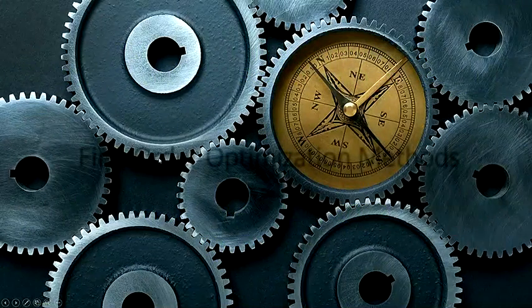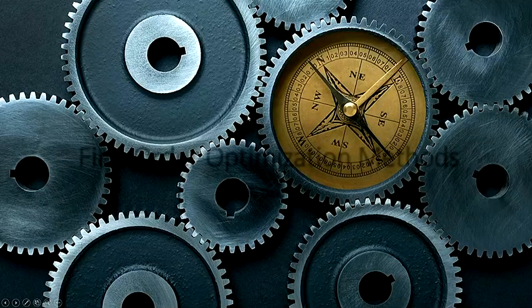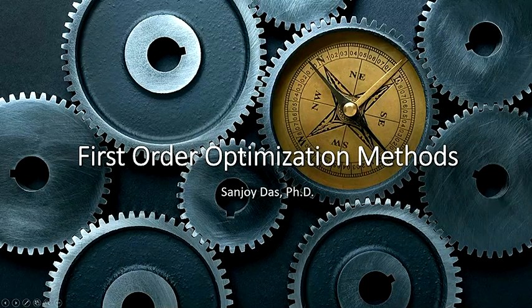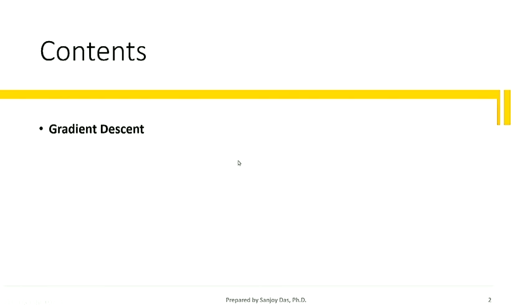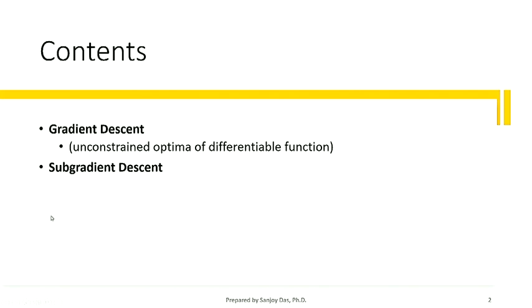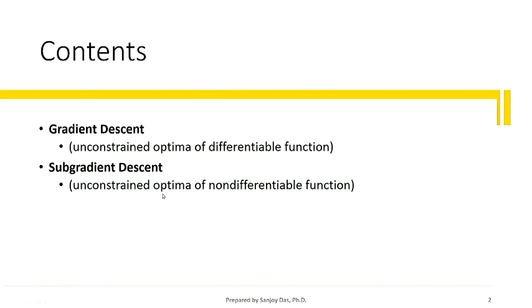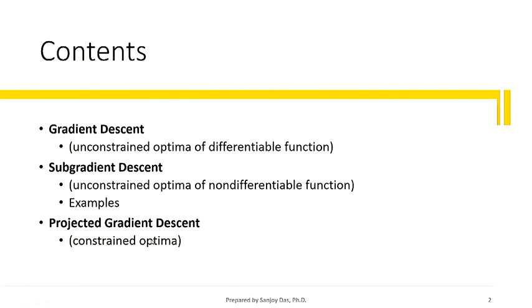Today we will look at first-order optimization methods — basically gradient-based. We look at gradient descent, which is for unconstrained optima of differentiable functions. Subgradient descent is for unconstrained problems with non-differentiable functions. And then projected gradient descent, which is for constrained optima. We'll look at examples for each of these methods.